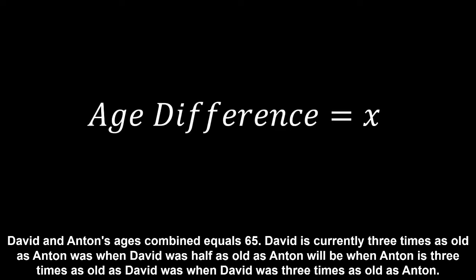To start off with, we want to try and get as much information as possible about their ages. Other than what is in the puzzle, the only other given is that they have a constant age difference, which we will represent as X. As soon as we work this out, we can get both of their ages straight away. We will start off at the end of the puzzle, as every age stated earlier is defined as an age described later in the puzzle.